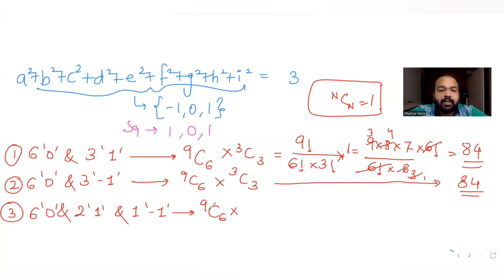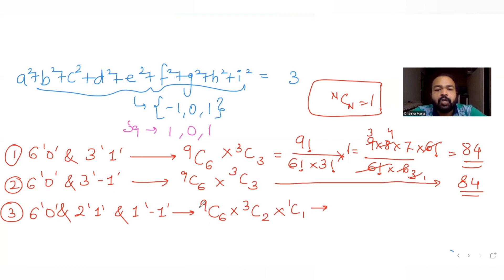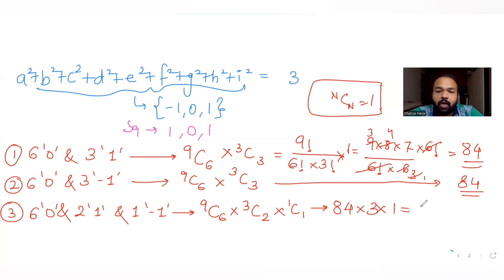For this third case, out of 9 elements, 6 are 0 (9C6 = 84 ways), then out of the remaining 3 positions, 2 are 1 (3C2 = 3 ways), and the last is -1 (1C1 = 1). So the total is 84 × 3 × 1 = 252 possibilities.